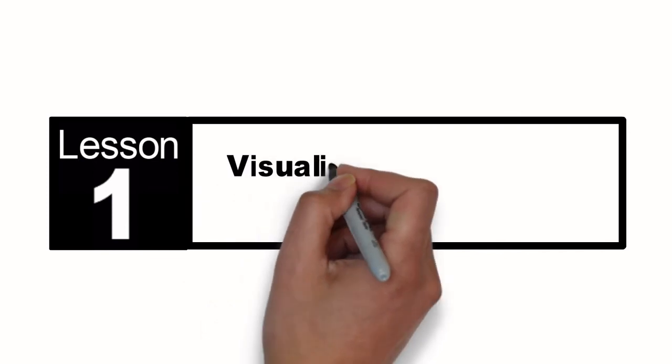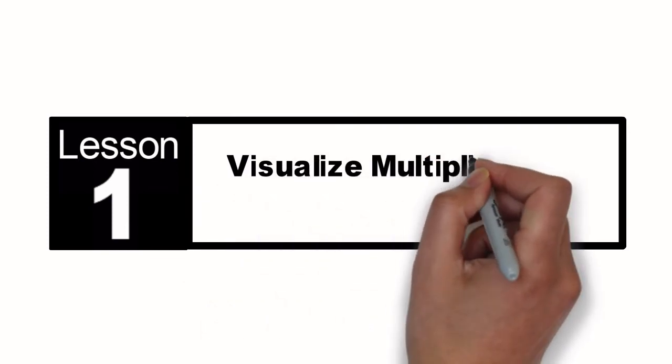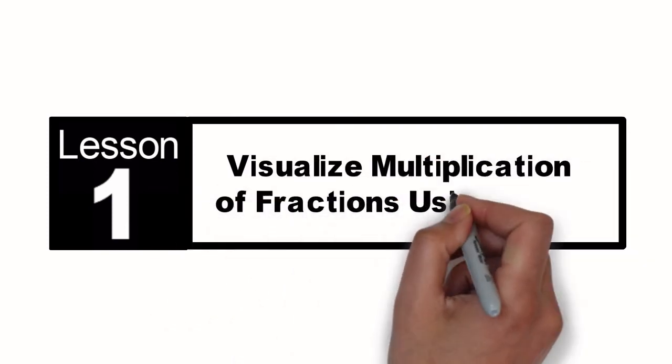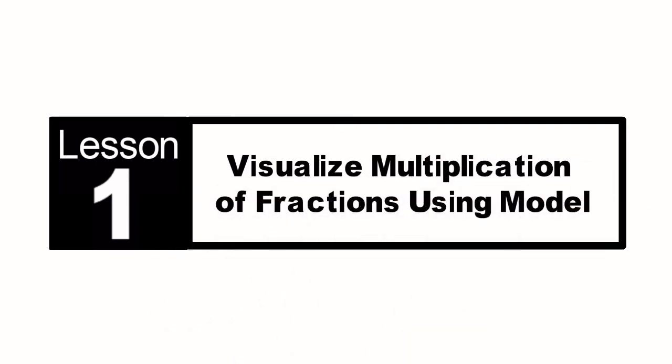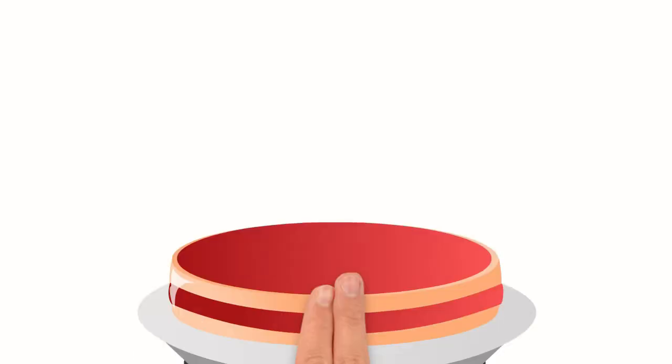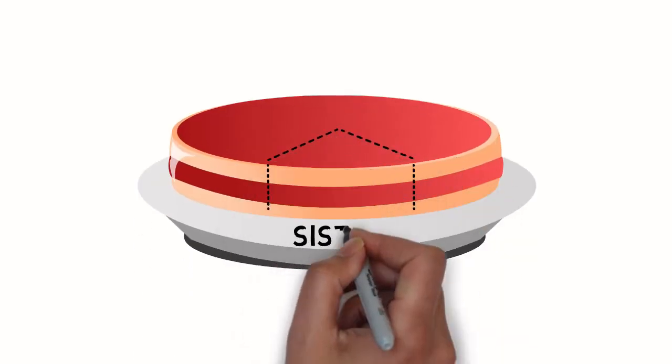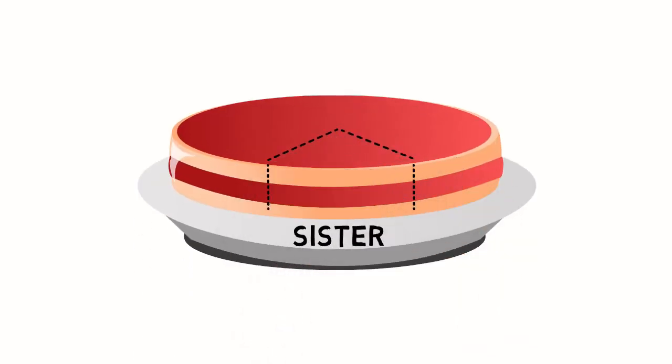Our lesson for today is visualize multiplication of fractions using a model. What part of the whole cake did Margaret give to her sister?